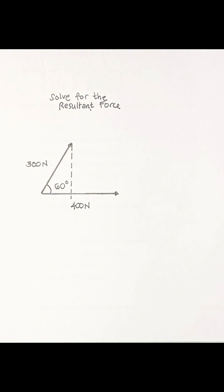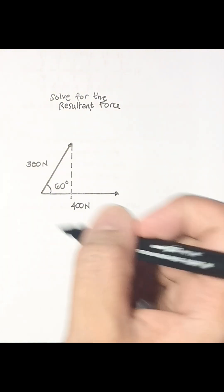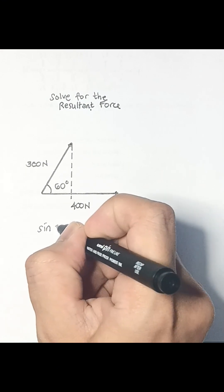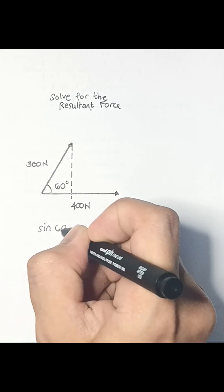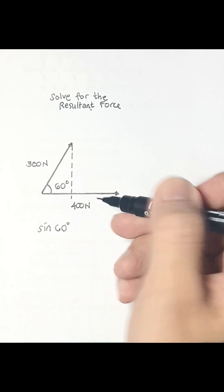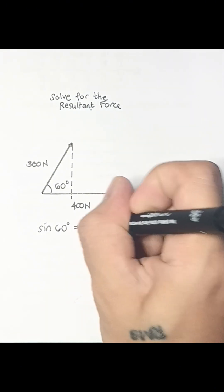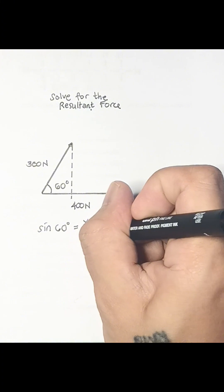We can draw an imaginary line opposite to the 60 degree angle to form a right triangle. We can solve for the length of the imaginary line opposite to the 60 degree angle using the relationship sine 60 degrees is equal to y over the hypotenuse which is 300 newtons.